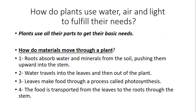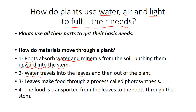How do plants use water, air, and light to fulfill their needs? The roots, the first part deep in the ground, absorb water and minerals from the soil, then push them upward into the stem. Then the water travels into the leaves through the stem. The leaves make the food through a process called photosynthesis. The food is transported from the leaves to the roots through the stem.